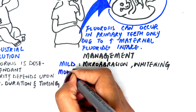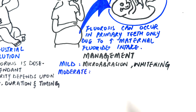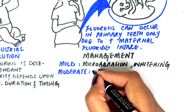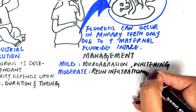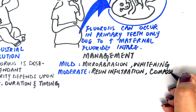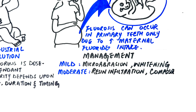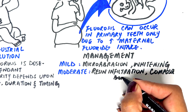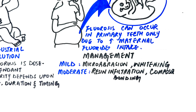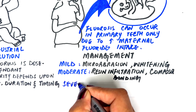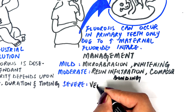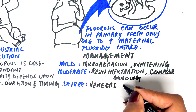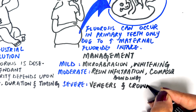Moderate cases can be treated with resin infiltration or composite bonding. Severe cases require more extensive treatment options such as veneers or full-coverage crowns.